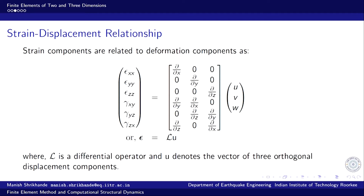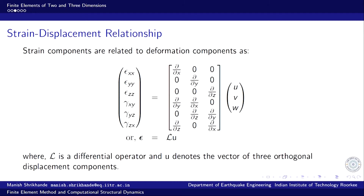This can be encapsulated in the operator notation seen earlier in our discussion of one-dimensional problems. The strain vector epsilon is given as a differential operator L times the displacement vector u, where u represents the three components u, v, w. The operator L operates on the displacement components to provide the respective strain components. This is the strain-displacement relationship.